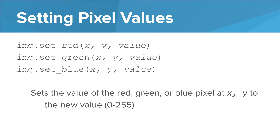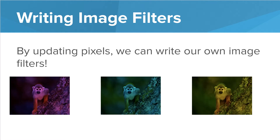We can also update the values of each pixel in the image. Once again, we are using the img image from earlier. To update the value of a pixel, we use the setRed, setGreen, and setBlue functions and then pass the x,y coordinates along with the new values for that pixel. Using this pixel data, we can read in an image and update the values of each pixel to create our own web filters.